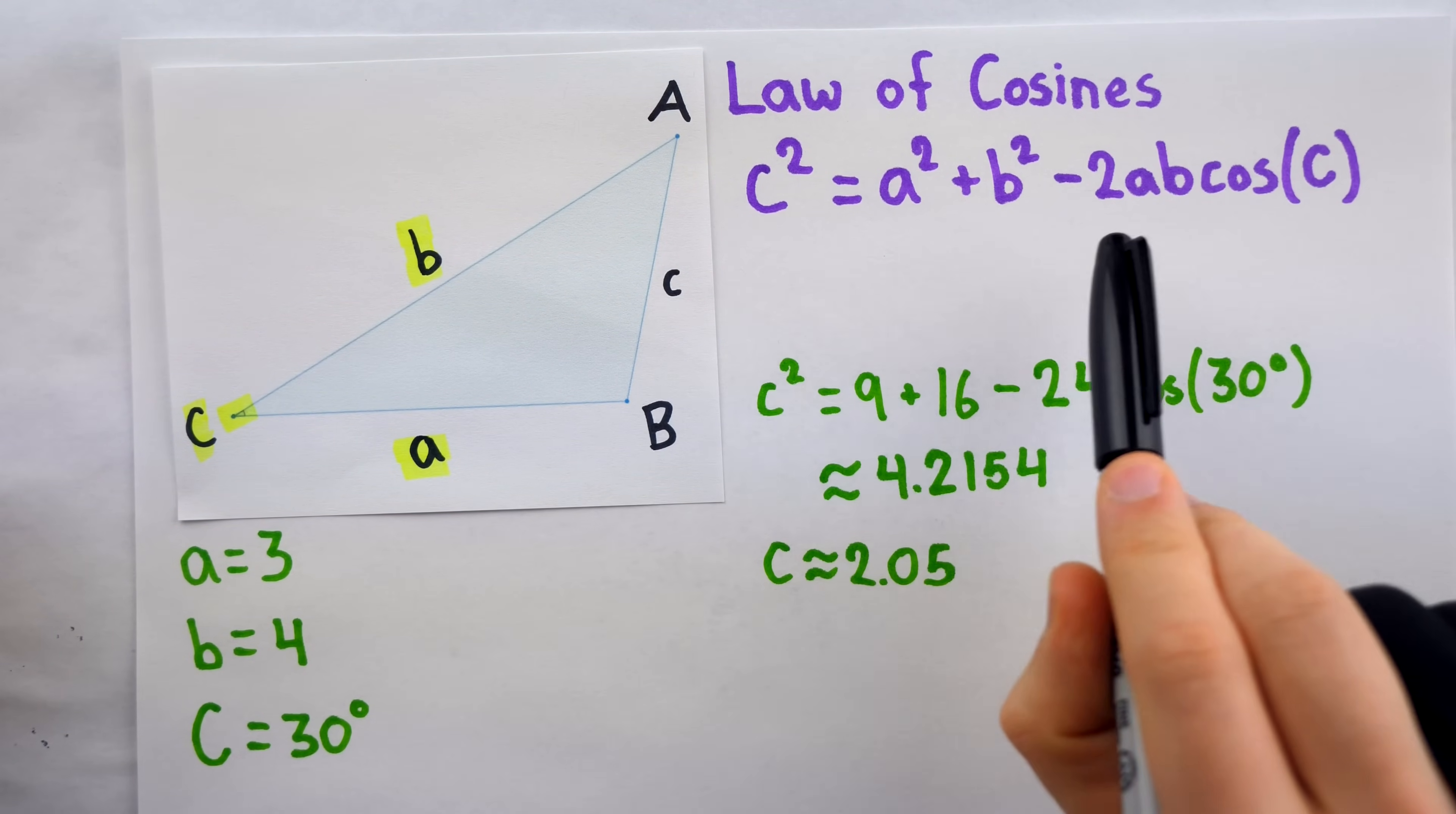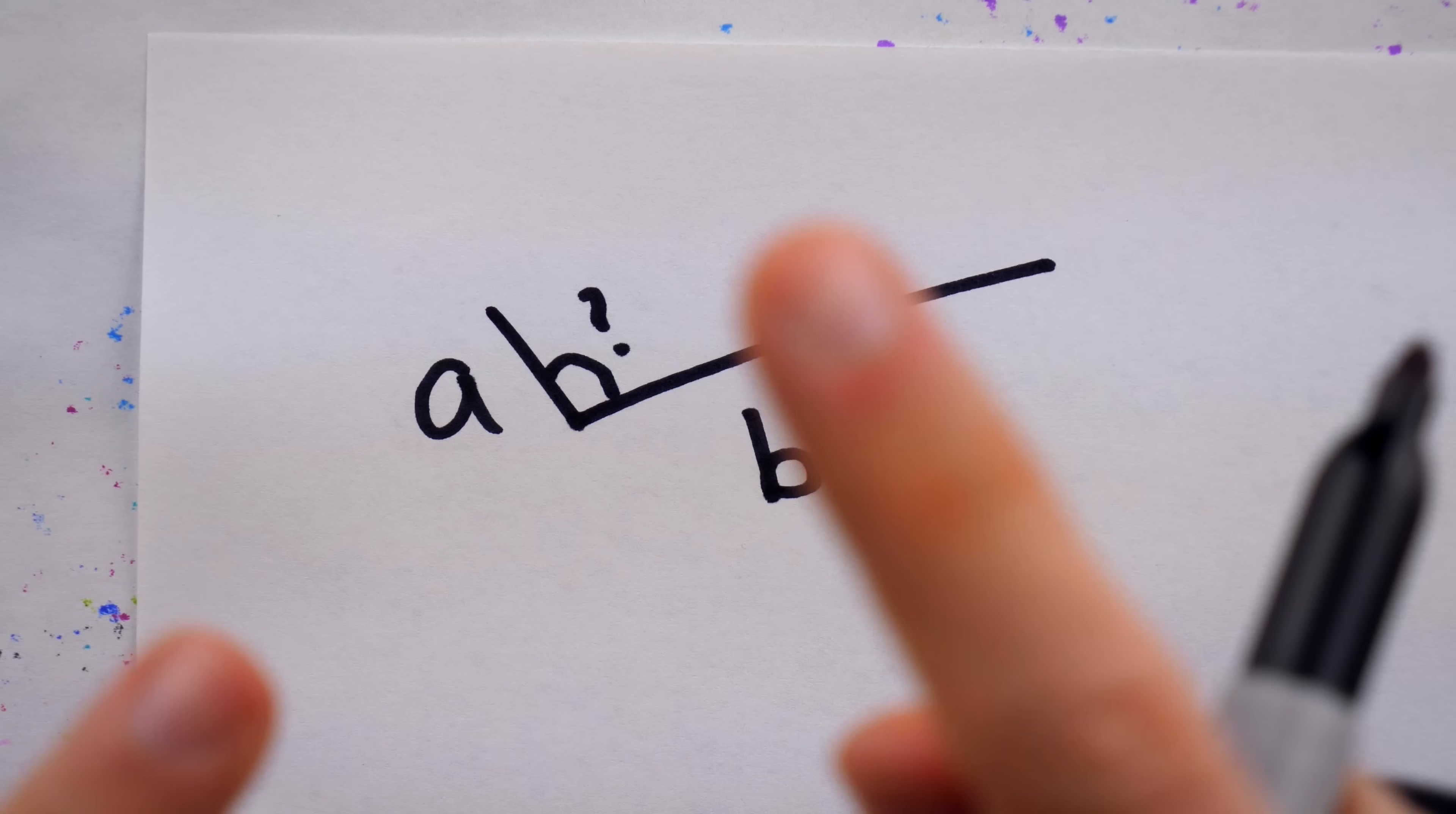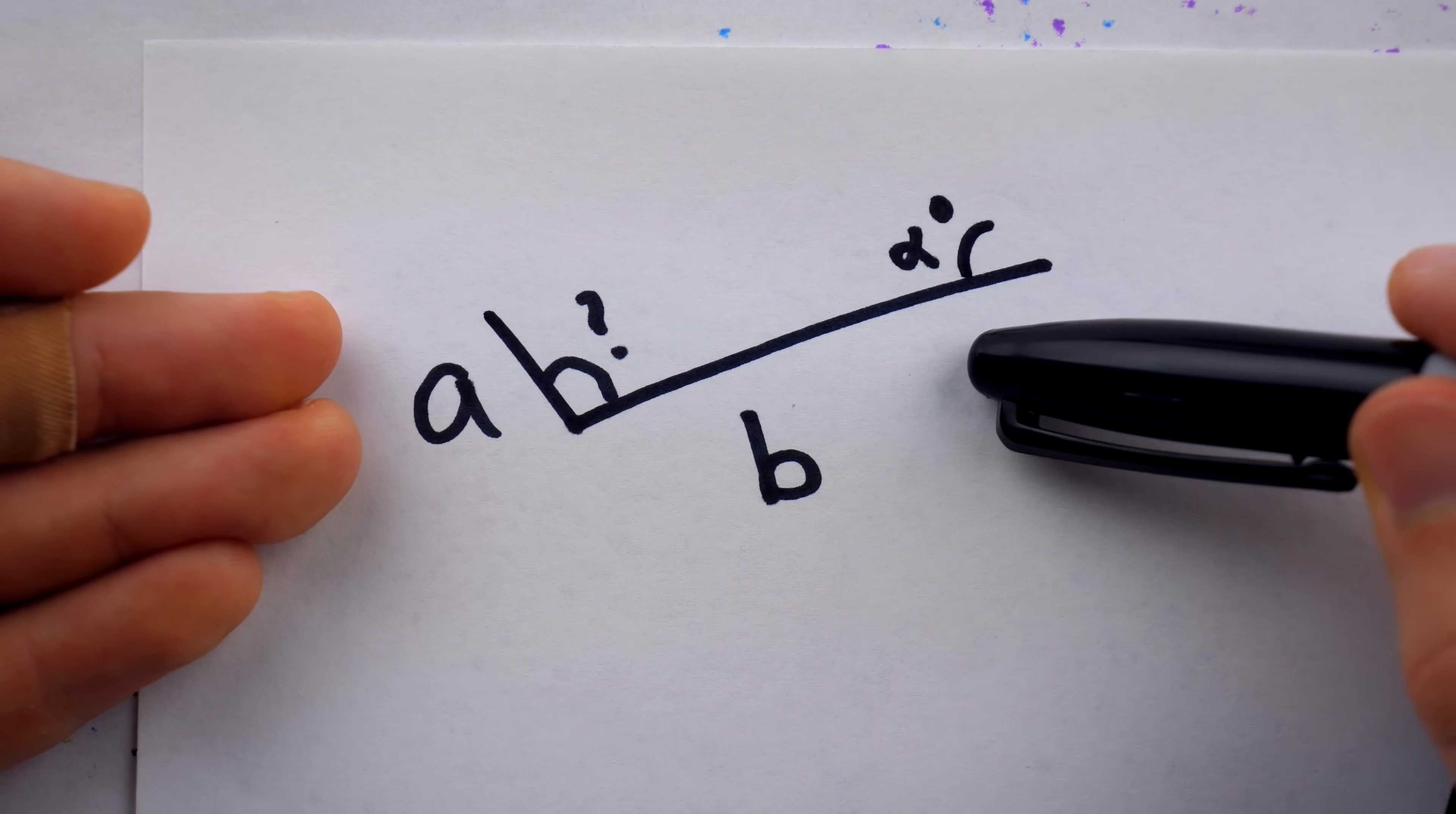It tells us that the length of this side, c, squared, is going to equal a squared, which is 9, plus b squared, which is 16, minus 2 times a times b, so 2 times 3 times 4, so 24, times the cosine of 30 degrees. And running the numbers on this is no trouble at all. Just bust out your trusty limited edition transparent green TI-83+, and crunch the numbers. 9 plus 16, minus 24 times cosine of 30. And we get about 4.2154. But remember, this is c squared, so we're going to want to take the square root of this in order to finish solving for c. And thus we get 2.05.